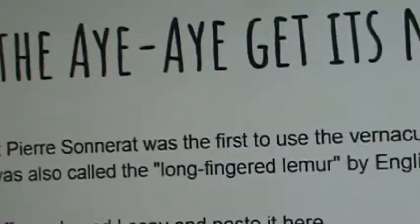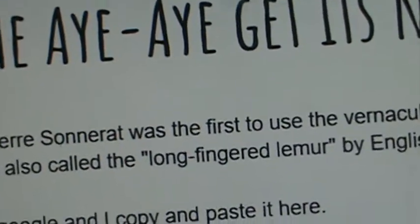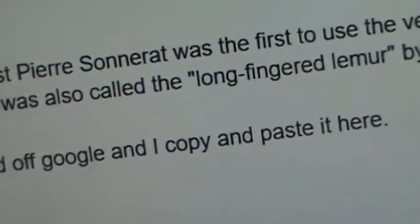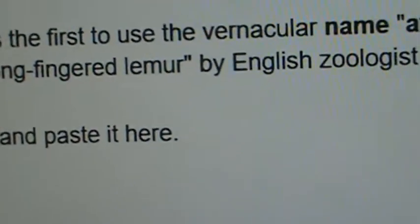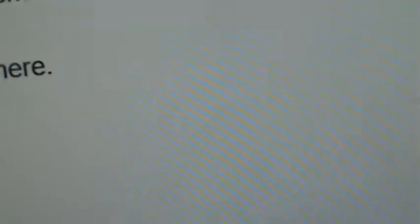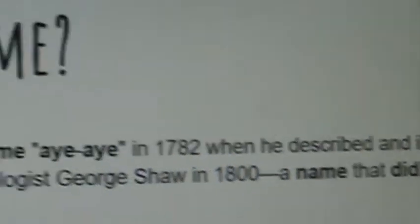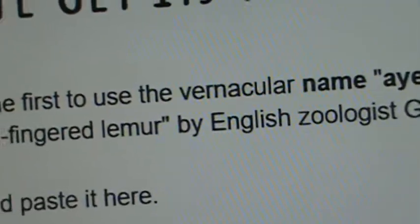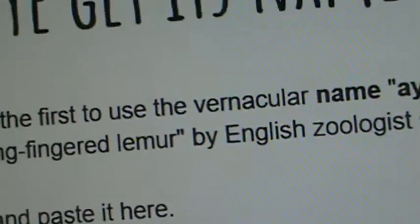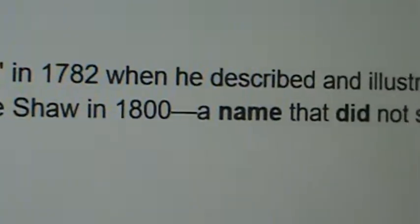How did the aye-aye get its name? The French naturalist Pierre Sonorate was the first to use the vernacular name aye-aye in 1782, when he described and illustrated it. It was also called the long-fingered lemur by English zoologist George Shaw in 1800.